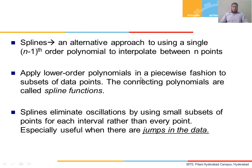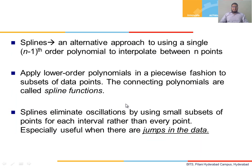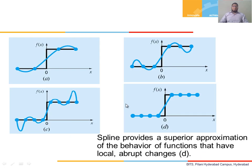Why are splines used? Splines are used because for each interval we get an approximate function — for a cubic, for example. When there is a jump in data, splines are very useful. When a third-order, fourth-order, and fifth-order polynomial are plotted, we don't seem to get the right results. But when a linear spline is plotted — that is, each interval is made into a separate function — we get almost exact results. So approximate, and indeed superior, approximation results are obtained.